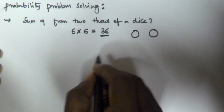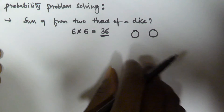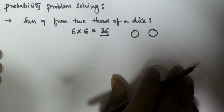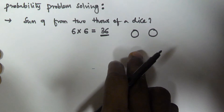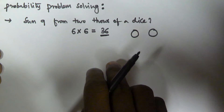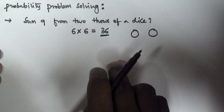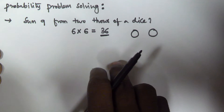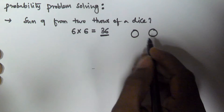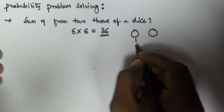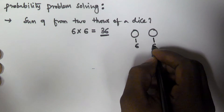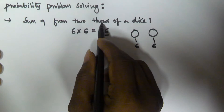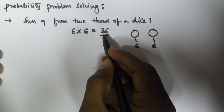In permutations and combinations, whenever we are performing 2 operations simultaneously one after another, both operations can be done in M into N ways — if the first operation can be done in M ways and the second in N ways, then both together can be done in M into N ways. In the same manner, when we throw the first dice we have 6 possible outcomes, and the second dice also contains 6 outcomes, so the total number of outcomes for 2 throws is 36.